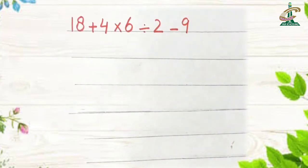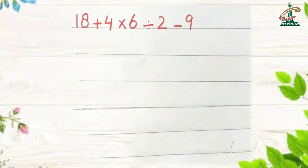This is the first question. 18 plus 4 multiplied by 6 divided by 2 minus 9. Now what will we do? We will write the question again.